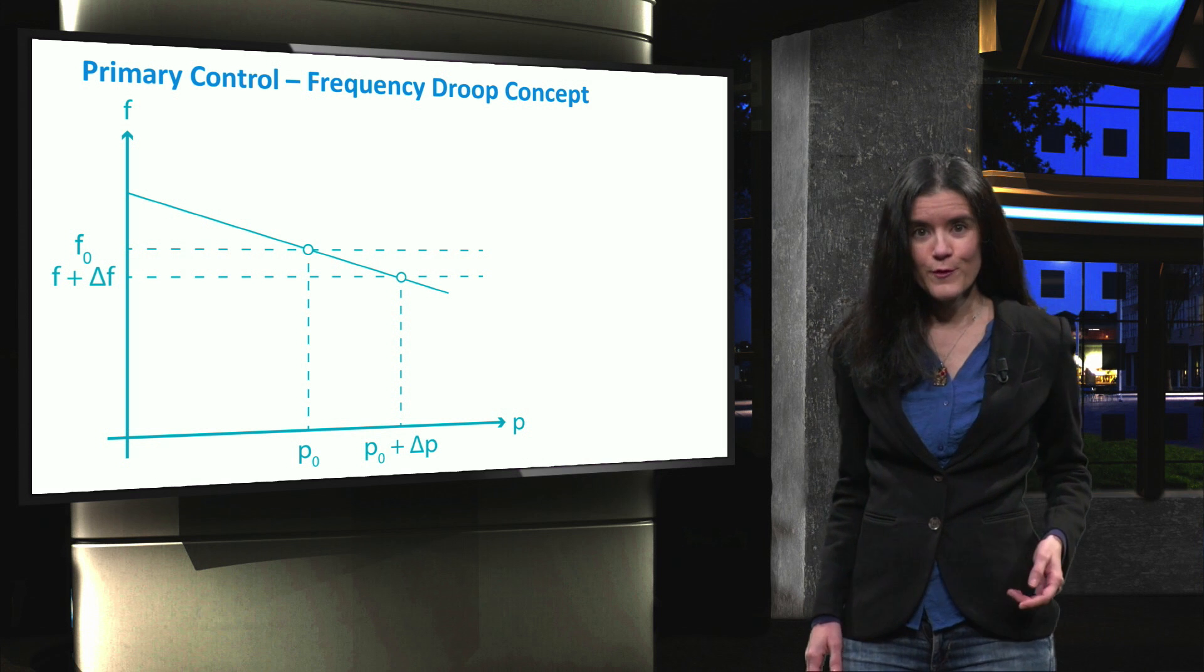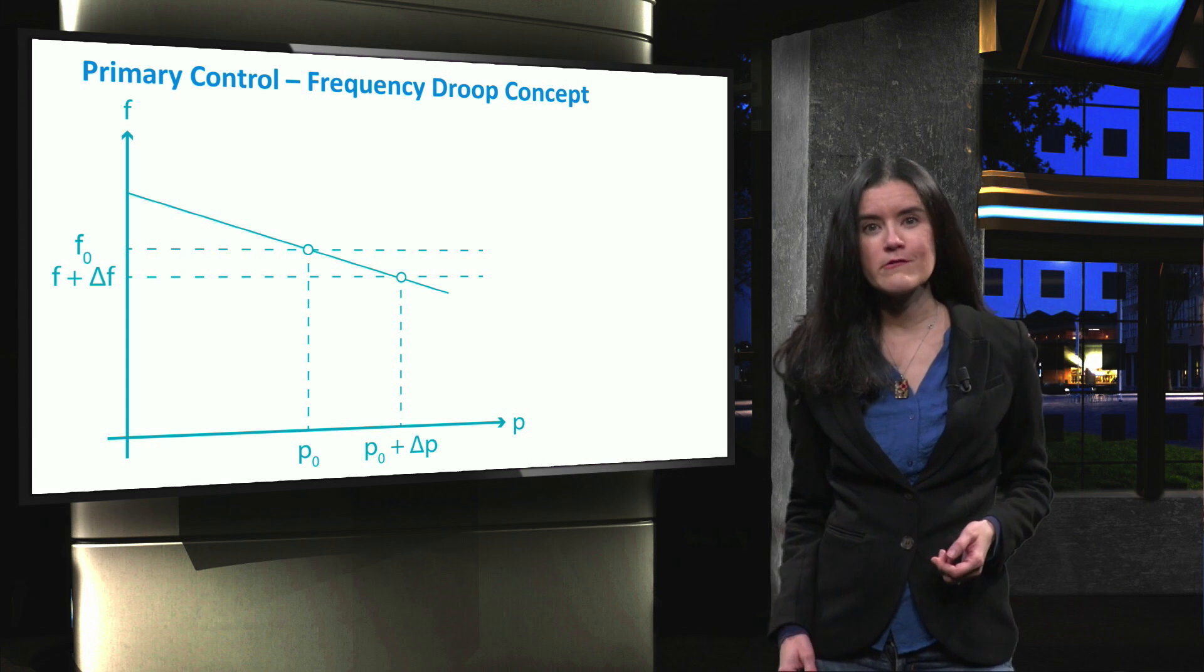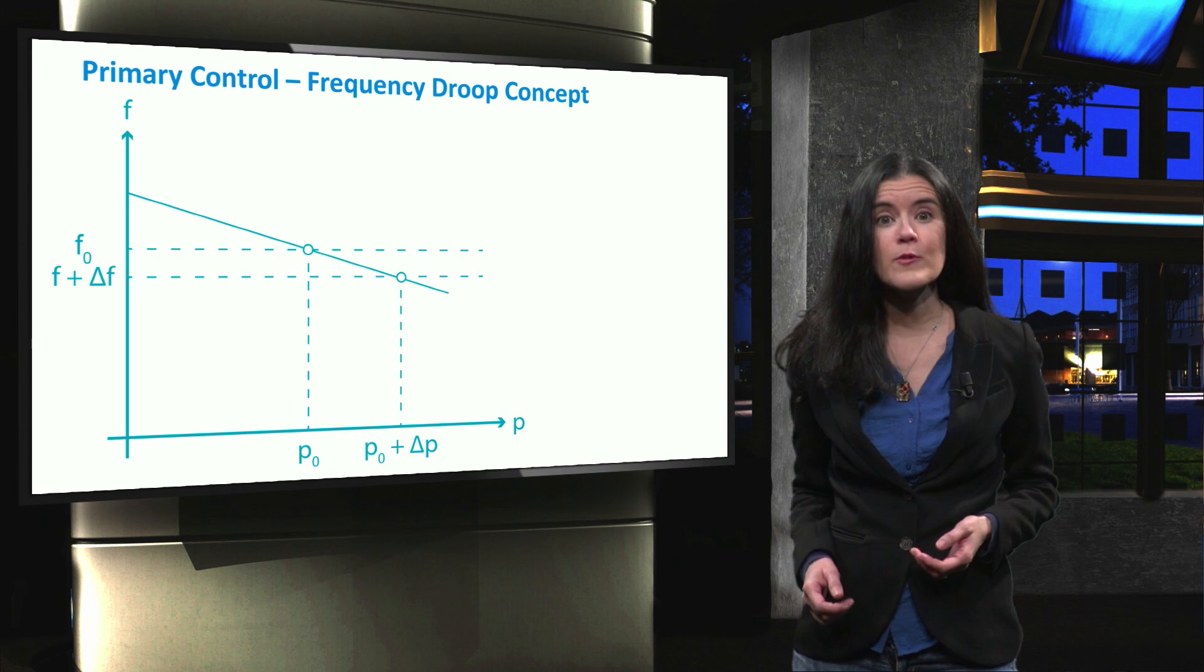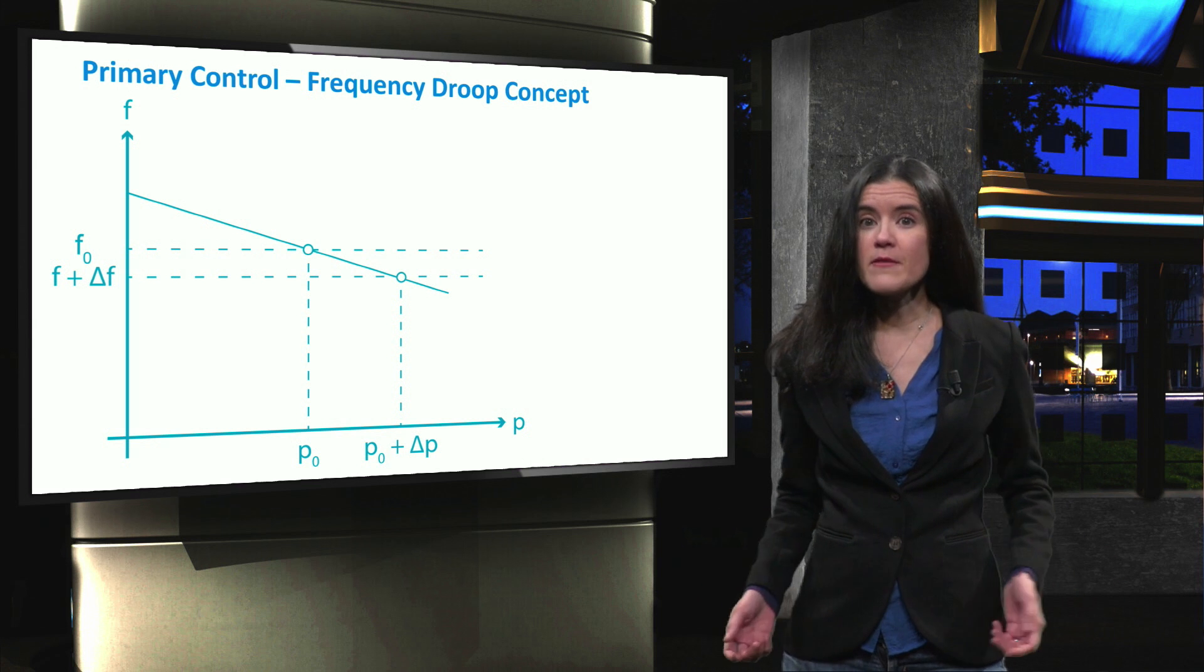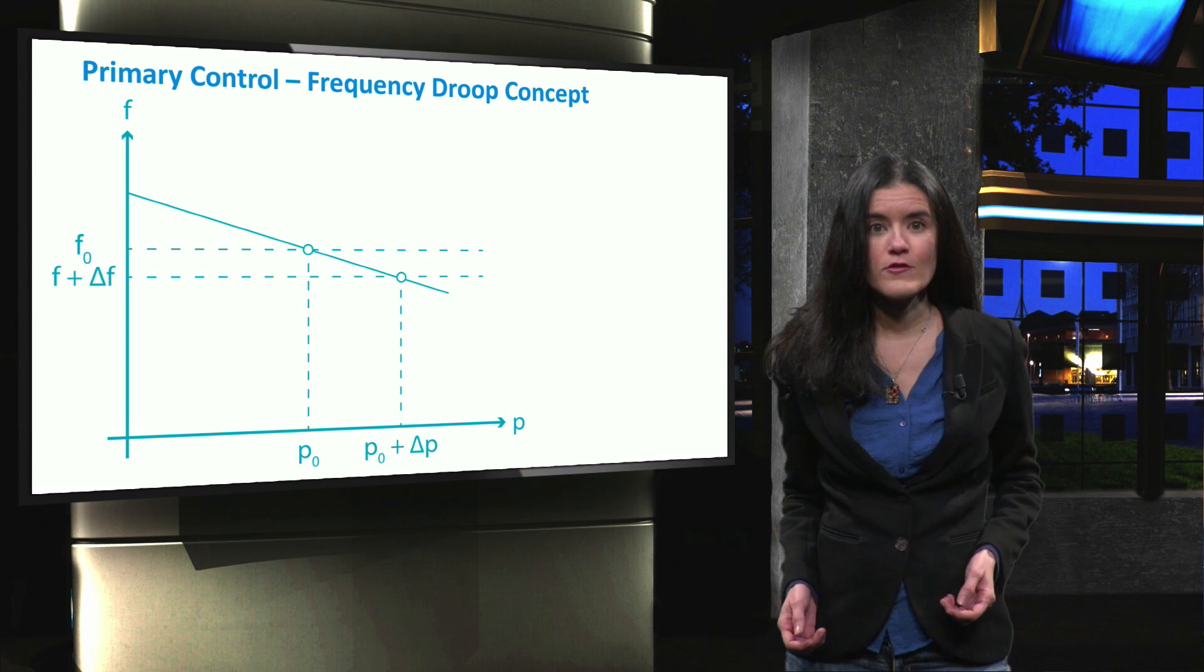The droop is the frequency drop in per unit of the rated frequency when the active power output of the generator rises from no load to full load. It can be mathematically described by the equation on your screen.